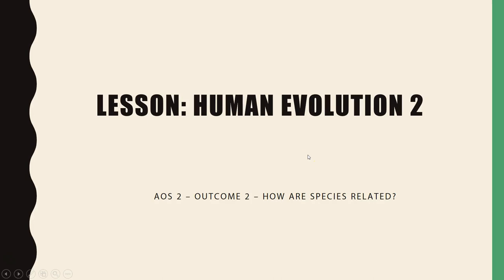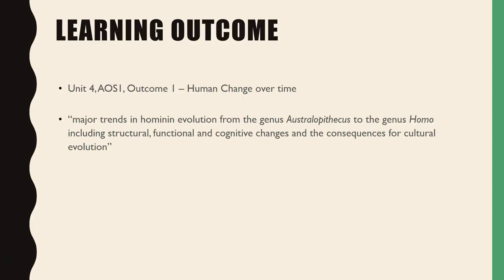Hi guys, welcome to the next lesson on human evolution. In this lesson, we're going to be looking at the major trends in hominin evolution, particularly focusing on the genus Australopithecus, and then we're going to be moving to the genus Homo, and we're going to look at the structural, functional, and cognitive changes as a consequence of cultural evolution and biological evolution.